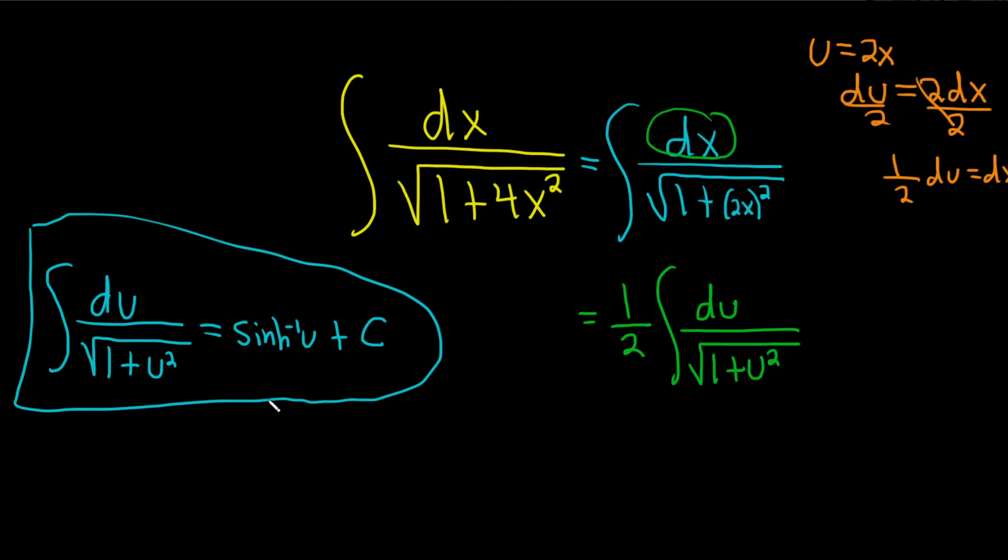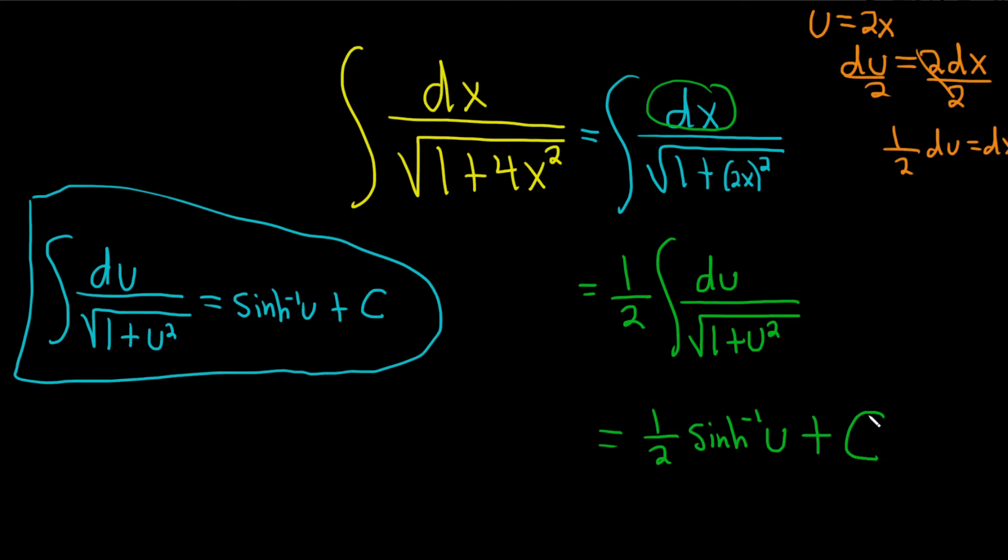Really nice. And now we can just apply this formula. So this is 1 half, and then we have sinh inverse of u plus our constant of integration, capital C. We're almost done.